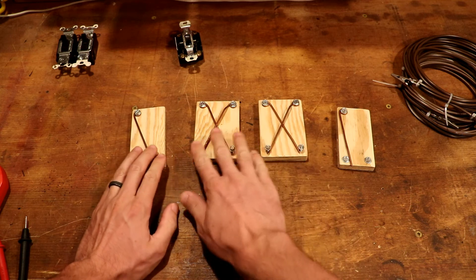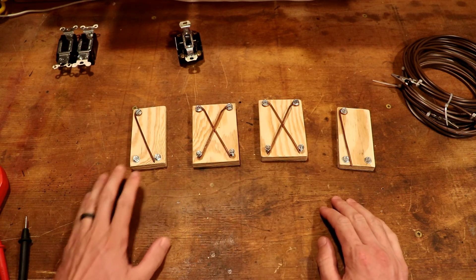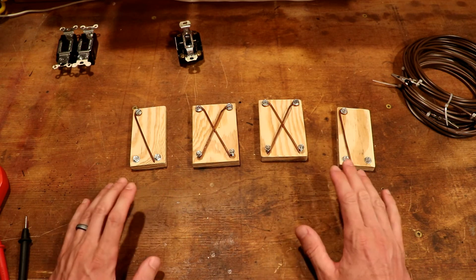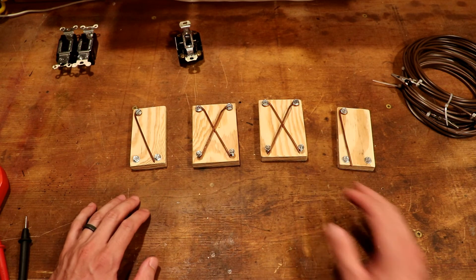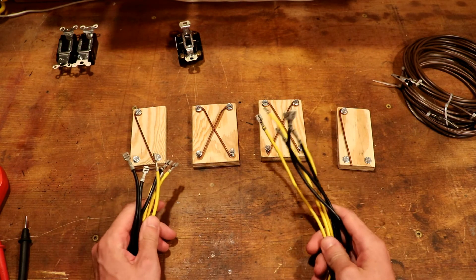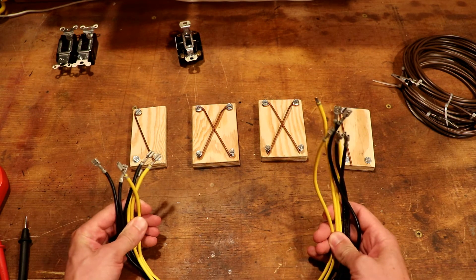Let's take a look at a worst case troubleshooting scenario. Say we have four boxes in the wall and they used to have switches in them, but somewhere along the lines, somebody took out all the switches. So now you're left with four boxes with a whole bunch of unlabeled wire ends sticking out of the wall. You have no idea where they go.